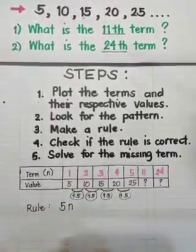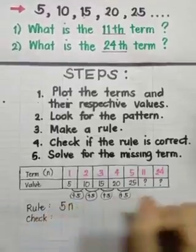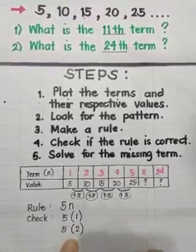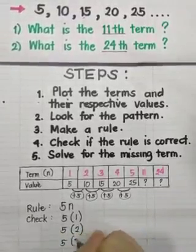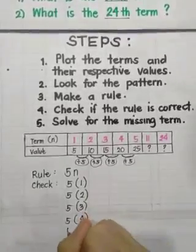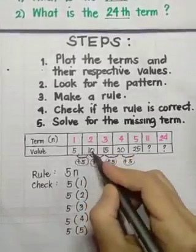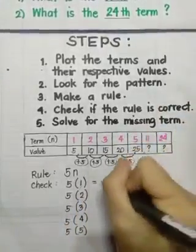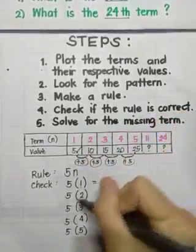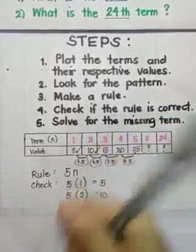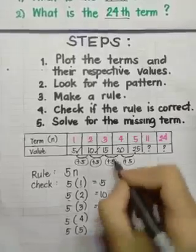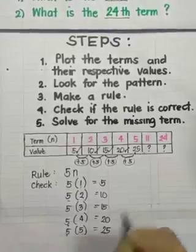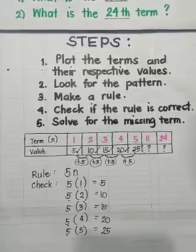Next, we're going to check if the rule is correct. We will substitute each term. We have 5 times the first term, then 5 times the second term, then 5 times the third, 5 times the fourth, and 5 times the fifth term. Let's see if it matches the numbers or terms in the sequence. Let's start with the first term: 5 times 1, so it's 5. Here it's also 5, so it's correct. Then second term, 5 times 2 equals 10, so it's correct. Then third, we have 5 times 5, so it's 15, correct again. And then, 5 times 4 is 20, correct. Then the last one, 5 times 5 is 25, so again, this is correct. It means that our rule is correct. So we will use 5N now to solve for the missing term.